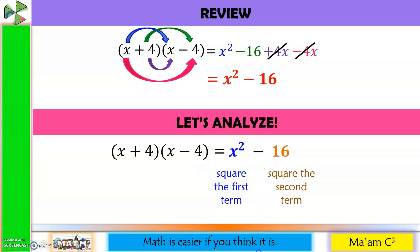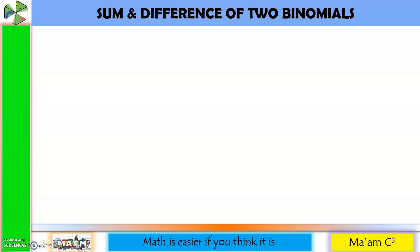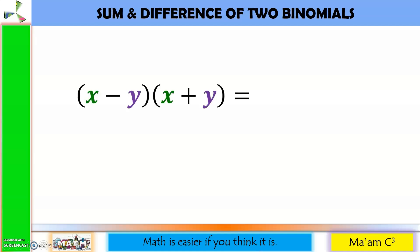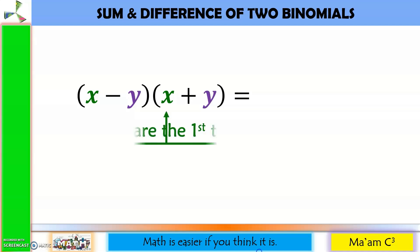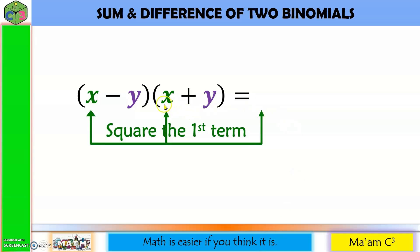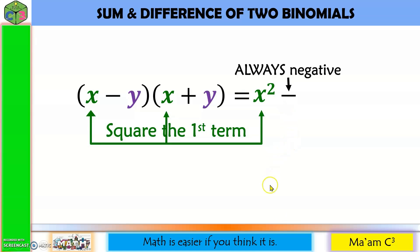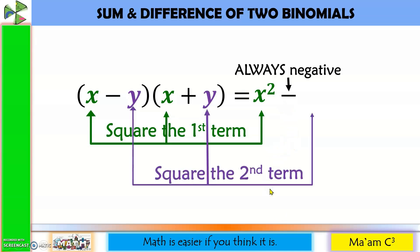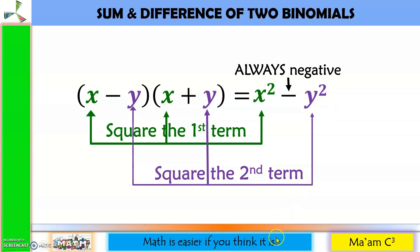This leads us to the sum and difference of two binomials. So if you have the quantity x minus y times x plus y, all you have to do is square the first term — the square of x is x squared — and then this is always negative, and then square the second term — the square of y is y squared. So we have x squared minus y squared. Very easy, right?